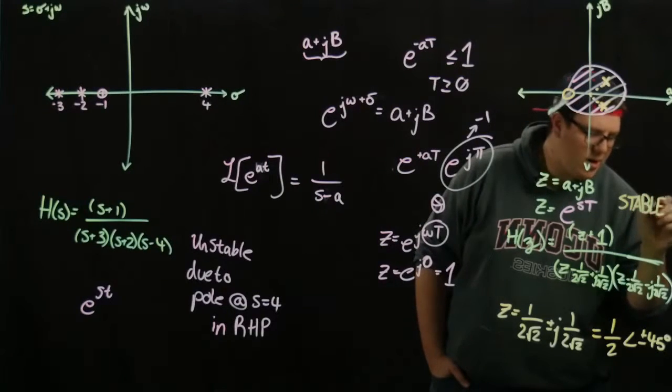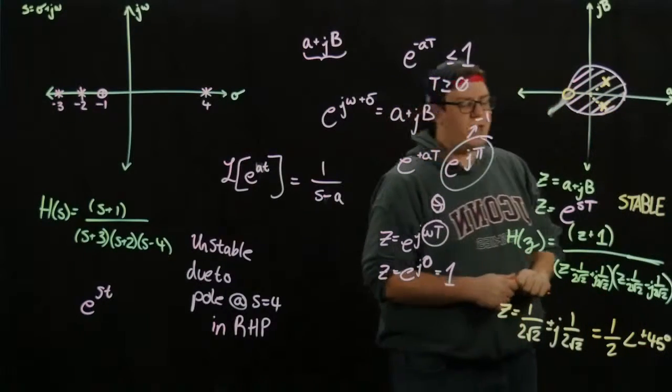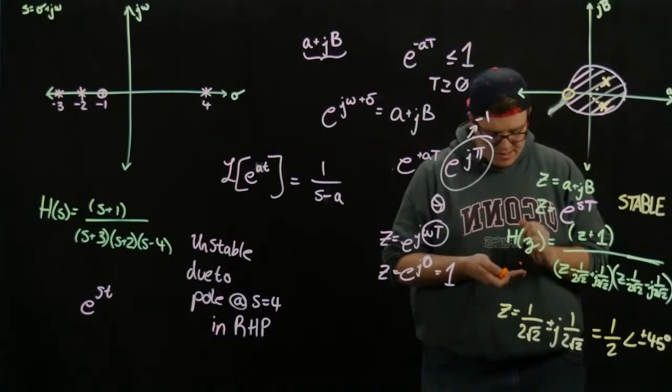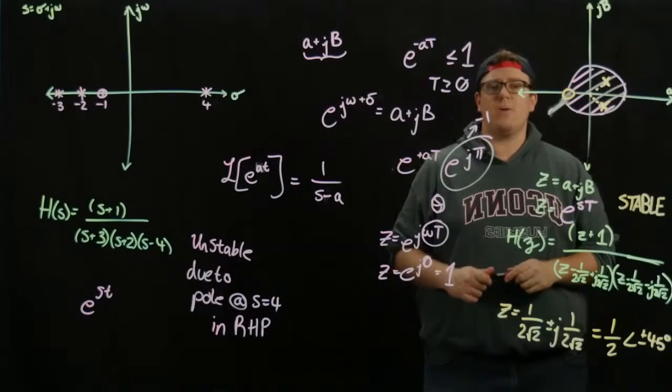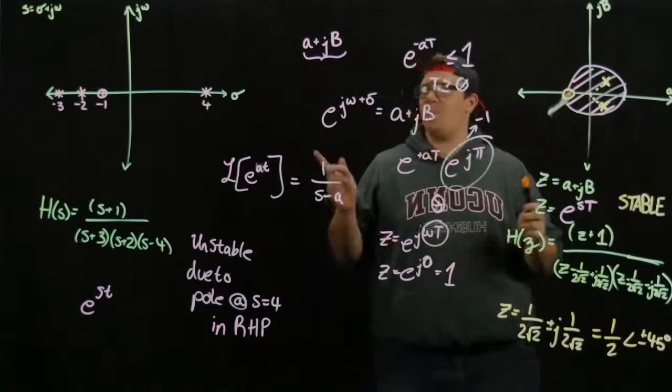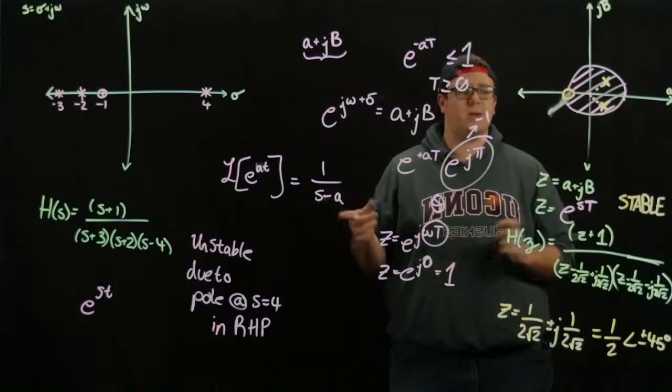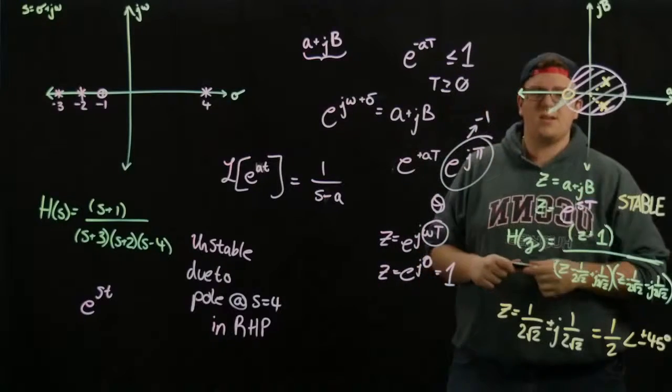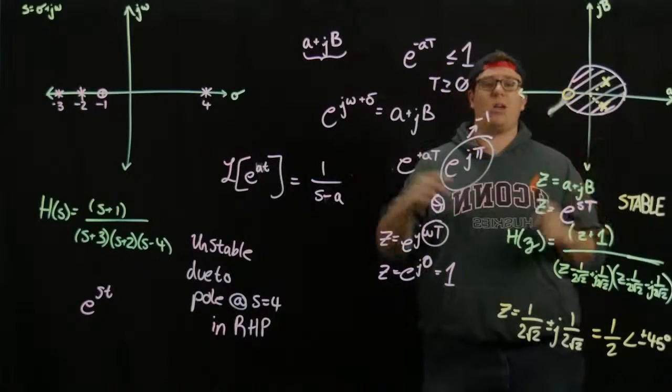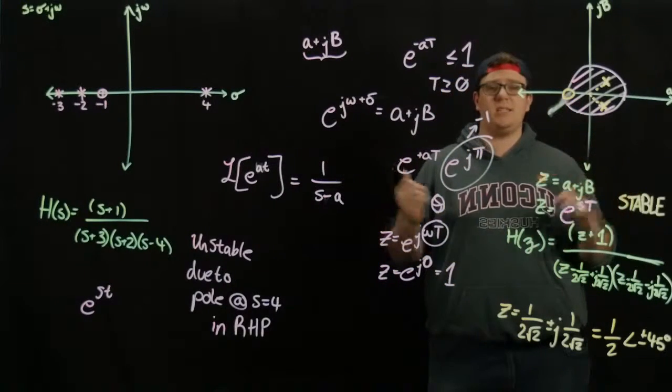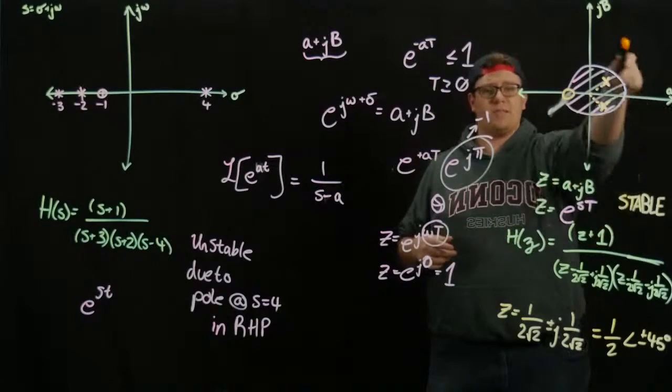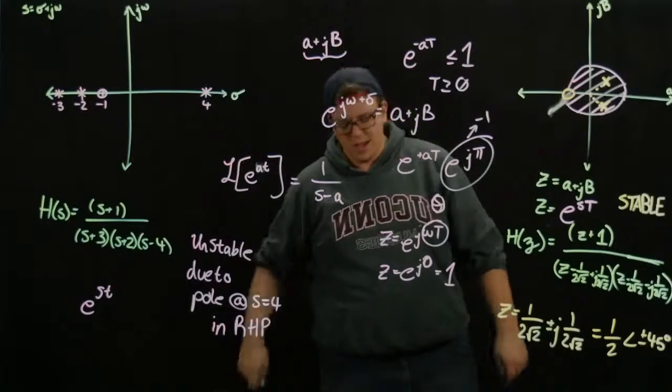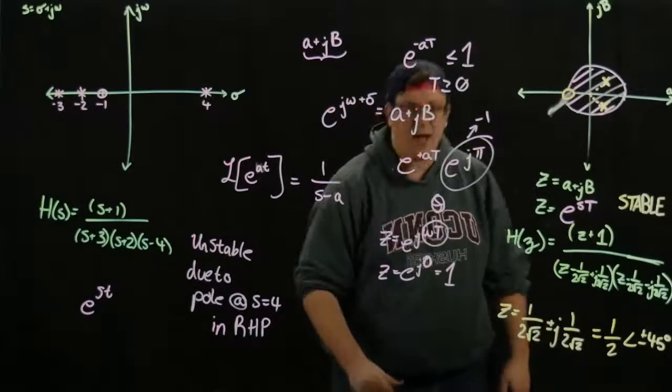And that if we created a system that had this transfer function for regular inputs, it will not go unstable. So I hope you guys learned something. And I hope that you understand the difference between the s-plane and the z-plane and how they're related and how stability works there. There are other tools to determine stability. But looking at, if you have the poles and zeros, it's the easiest way to look at it. It's just for the z-plane, are they inside the unit circle? And for the s-plane, are they all in the left half plane? So I hope you guys learned something. And have a good day, guys.